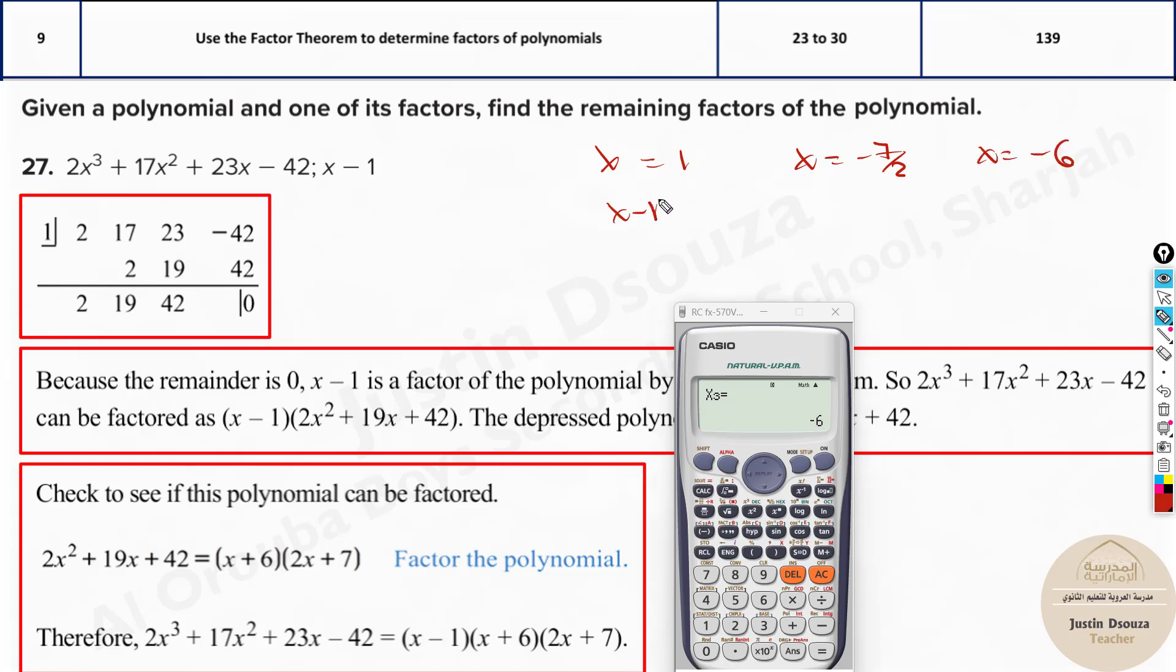Now, these are very simple. It will be (x - 1) as a factor, (x + 6) as one more factor. What about this? The factor can be written as (x + 7/2) or (x + 3.5). But the thing is that may not be there in the options.